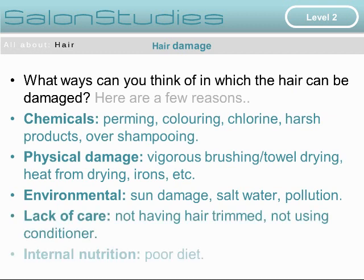What ways can you think of in which the hair can be damaged? Hair can be damaged by physical means such as vigorous brushing, towel drying, or heat from dryers, straightening irons and heated tools. Hair can be damaged environmentally through sun damage, salt water and pollution, or through lack of care — not having hair trimmed, not using conditioner — internal nutrition or poor diet.